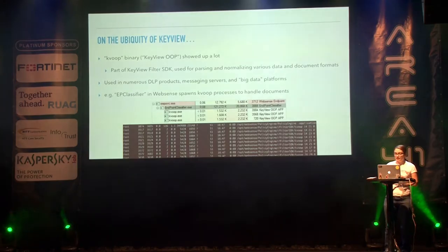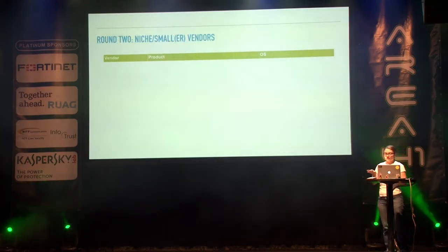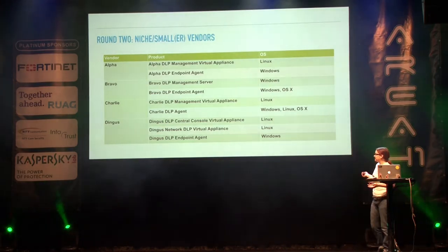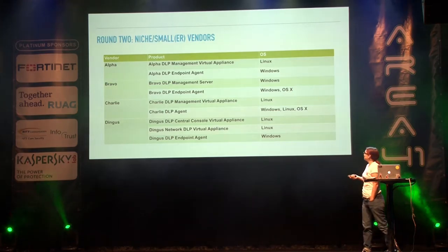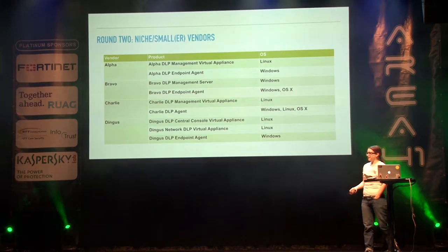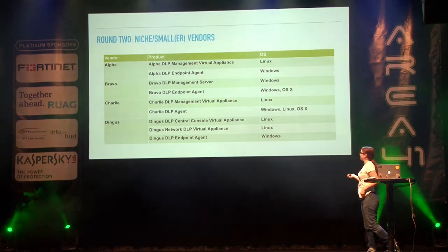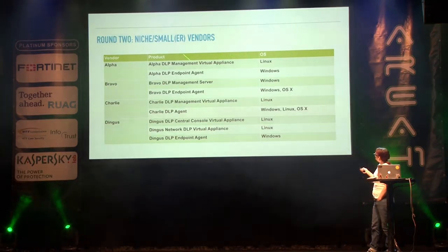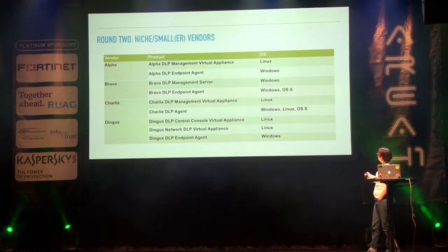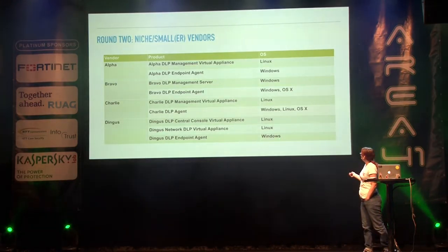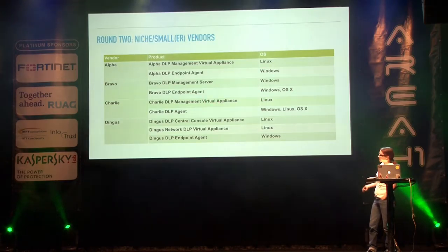In WebSense, there's a thing called EP Classifier that spawns all these KVOOP processes, creating a policy engine filter and looking at documents living on the file system or being accessed. For round two, we changed vendor names — partly because they're smaller vendors and partly because they can't handle criticism as well as big companies with lots of money. We named them Alpha, Bravo, Charlie, and Dingus. The virtual appliances are all Linux. Endpoint agents: all support Windows; Charlie and Bravo support OSX; Charlie also supports Linux. The Bravo DLP management server is Windows; the rest are Linux.